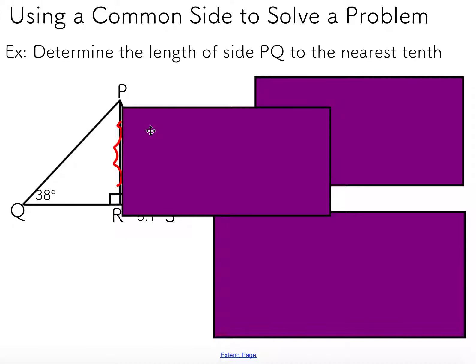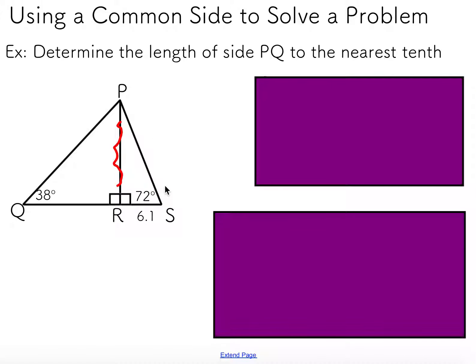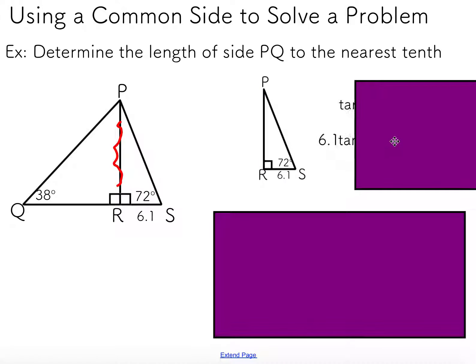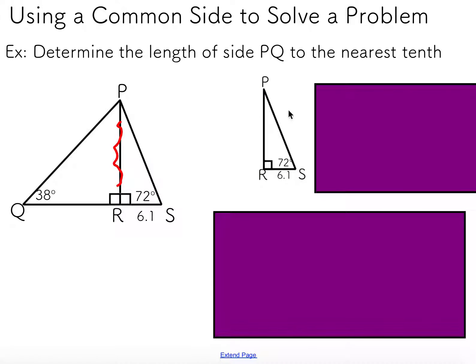What I would need to do is use the triangle on the right, which has enough information, to solve for this height, which I could then use in the triangle on the left. I'm just going to pick on that triangle on the right. I've just duplicated it off to the right here.